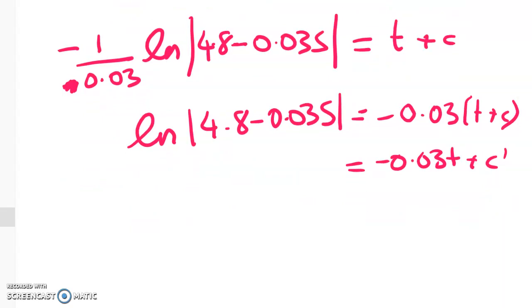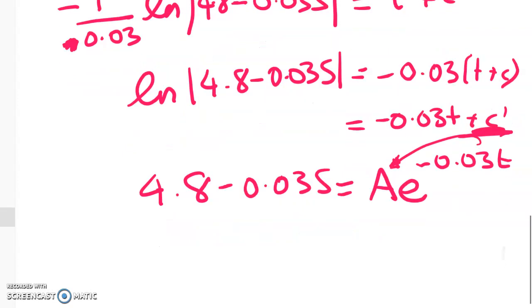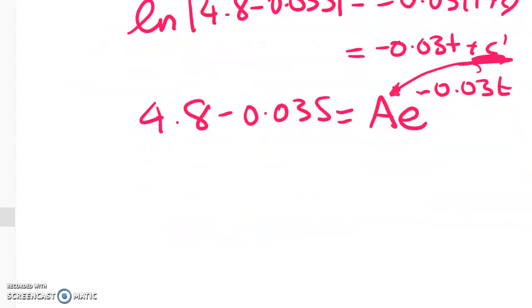So let's do e to the power to both sides gives us 4.8 minus 0.03S is equal to Ae to the negative 0.03T, right? I'm not going through that step there very slowly because it's two days before the scholarship exam and I'm hoping you know that by now. So let's keep on going. All we've got to do now is solve it. But I am going to go through that here.